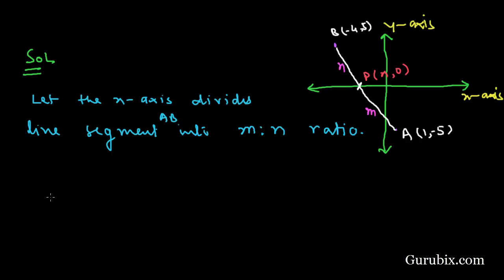The y-coordinate is 0 and m will be multiplied with 5, this means we have 5m, and n will be multiplied with -5, then it will be -5n, and here we have m + n.